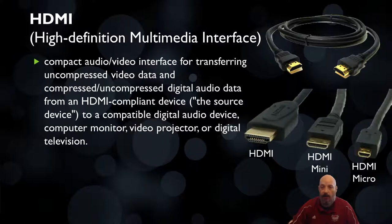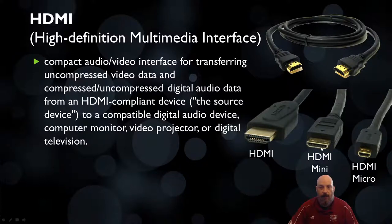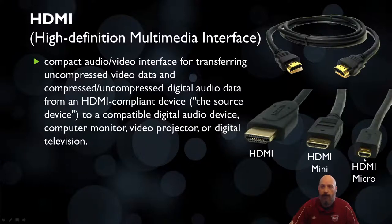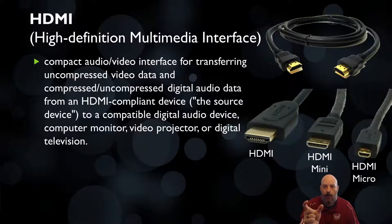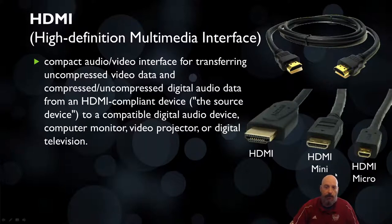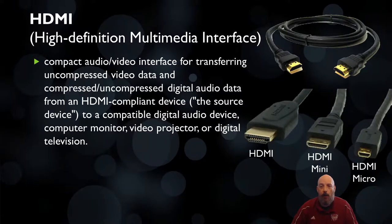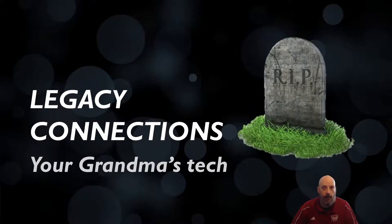HDMI comes in different sizes: the full normal size seen in most consumer electronics, the mini HDMI used in smaller devices like camcorders, and the micro HDMI for very small configurations. I've seen the micro used in small cameras called GoPros — about the size of a box of matchsticks — which need the smaller interface to pull video out. HDMI is now the new standard for consumer grade electronics, replacing the RCA connectors.